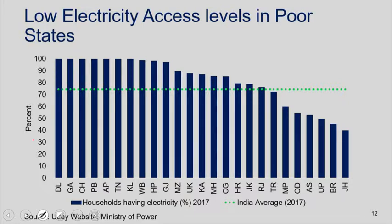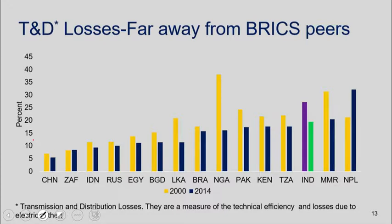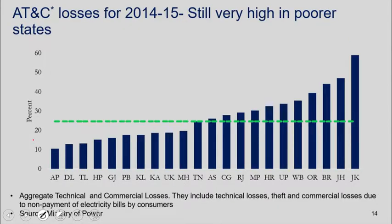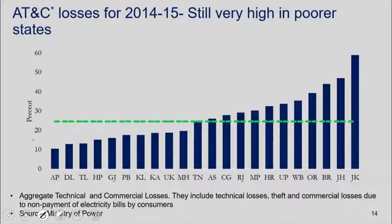Delhi, Goa, and Chandigarh have attained pretty good access levels. Transmission and distribution losses in India are pretty high compared to BRICS peers — about 15% or a little more — though they've improved over time. We also measure a slightly different metric called ATC losses — Aggregate Technical and Commercial losses — which include technical losses, theft, and commercial losses due to non-payment of electricity bills.